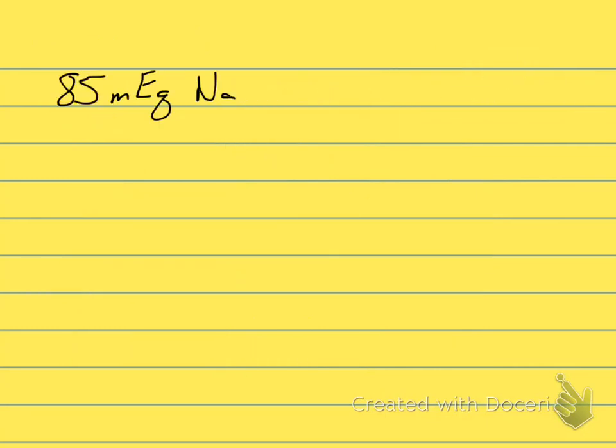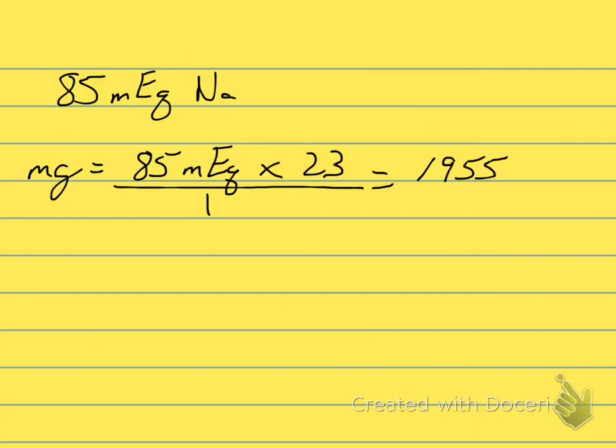So we go back to our formula that we had to get milligrams. To get milligrams, we're going to take our milliequivalents, 85 milliequivalents. We're going to multiply that by the atomic weight or atomic mass, which is 23, and then we're going to take that and we're going to divide it by the valence, which is 1. And for our sodium, that's going to give us 1,955 milligrams.